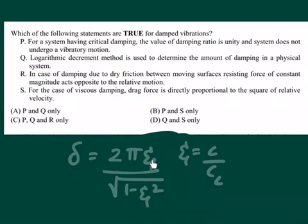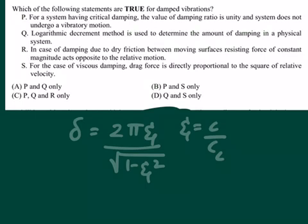So if I can compute my delta, then zeta can be computed. From zeta, the amount of damping present in the system can be determined because cc is a constant which is given by 2√km.